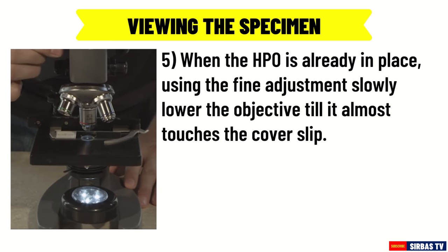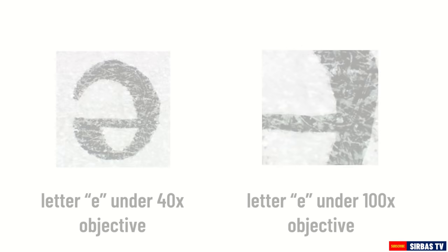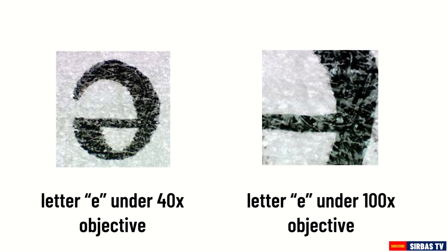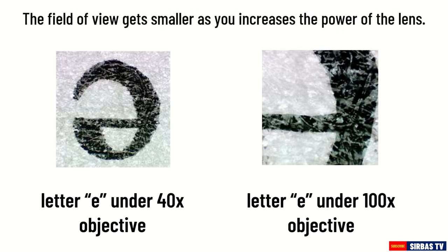Observe the image formed under the 40x objective and the 100x objective. The field of view gets smaller as you increase the power of the lens. As you increase the magnification, it will come to the point that you will only see a portion of the specimen.